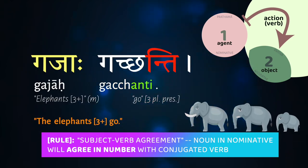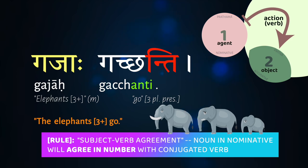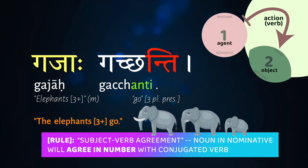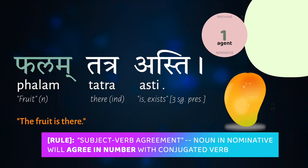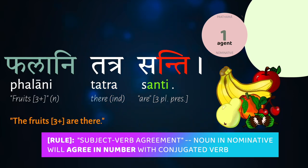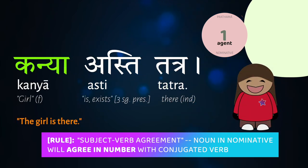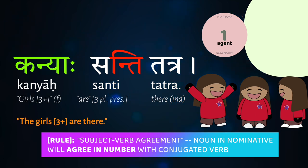If we had three or more elephants who are going, it becomes gajaha gachanti — the -anti is the third person plural ending of gam, to go. The gender of the subject doesn't matter for agreement; the number is what matters. So 'a fruit is there' would be phalam tatra asti; 'two fruits there' would be phale tatra staha (staha being the dual third person of the verb as, to be); 'many fruits there' is phalani tatra santi. Similarly, kanya asti tatra — the girl is there; kanye staha tatra — the two girls are there; kanyaha santi tatra — there are many girls there.